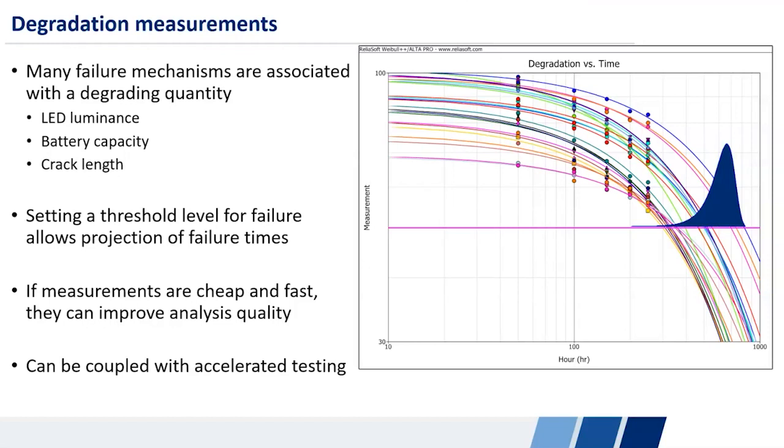The classic example being tire tread depth. You can estimate when your tires are going to lose all their tread depth by continually measuring the tread depth. A couple other examples are crack length. They do that in airplanes. They look at the crack length in certain airplane components to predict when they'll eventually fail. LED bulbs lose brightness before they fail. So you can track LED brightness and make some sort of projection about the life of an LED.